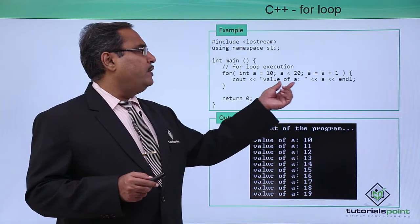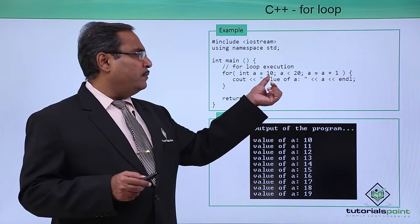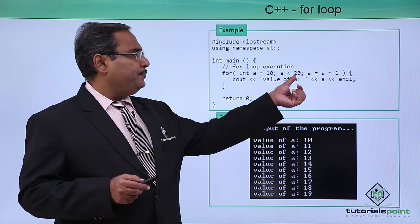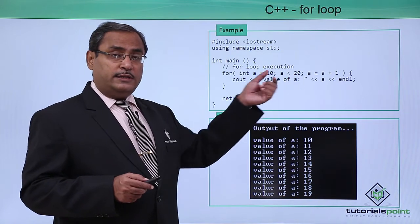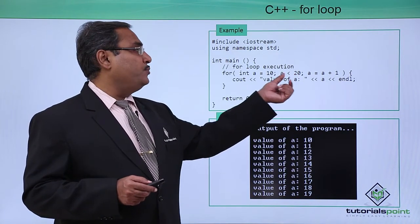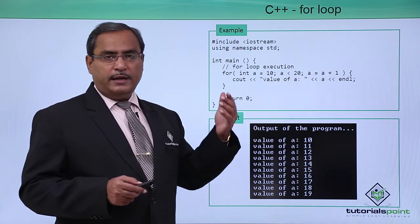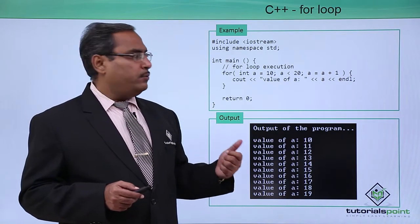See how the value of a has got printed. The value of a will be printed from 10 to 19 because it is less than 20, so 10 to 19, because each time it is going on increasing itself by 1.